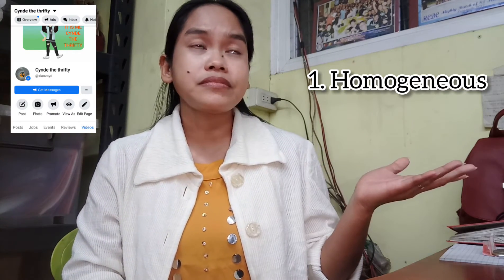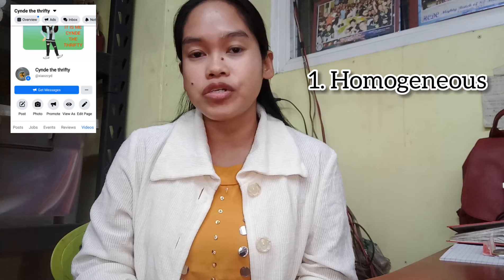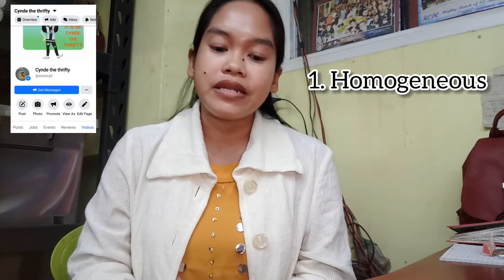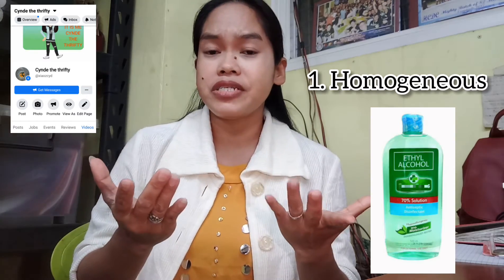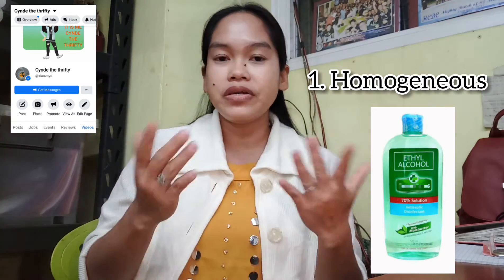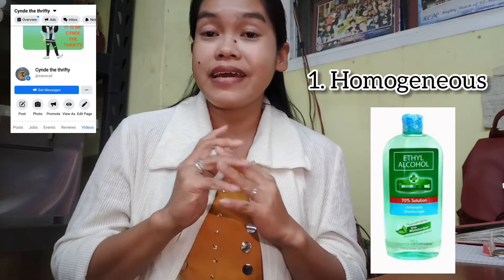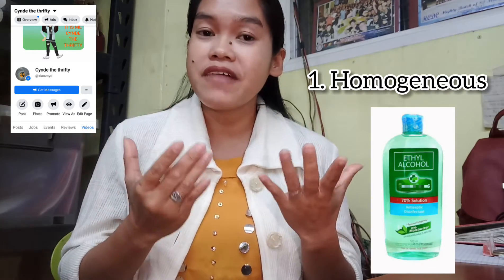Another example of a homogeneous mixture is air. The air in our surroundings is composed of different types of gases — oxygen, carbon dioxide, hydrogen, xenon, neon, krypton, helium, and many more. Air is an invisible mixture of different gases that surrounds the Earth, so it also has a uniform composition. Another example is alcohol — the alcohol we use when washing our hands. Alcohol is a mixture of organic molecules like carbon, oxygen, and hydrogen atoms, but you can't identify each component, so it is a homogeneous mixture.